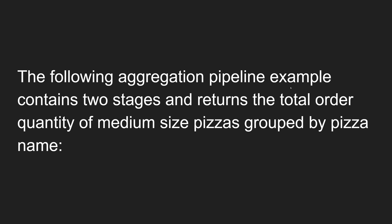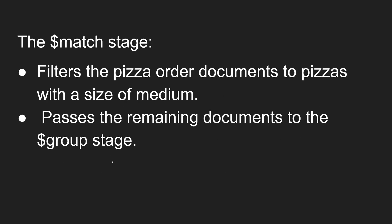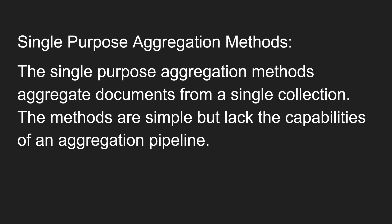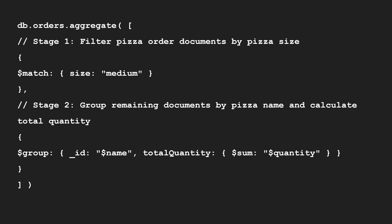This aggregation pipeline example contains two stages and returns the total order quantity of medium-sized pizzas grouped by pizza name. The dollar match stage is just like the find method - it filters pizza order documents to pizzas with the size of medium and passes those documents to the group stage. In the group stage, documents are grouped by pizza name, and the dollar sum operator calculates the total order quantity. The total is stored in the totalQuantity field returned by the aggregation pipeline. You can have more than two stages as needed.